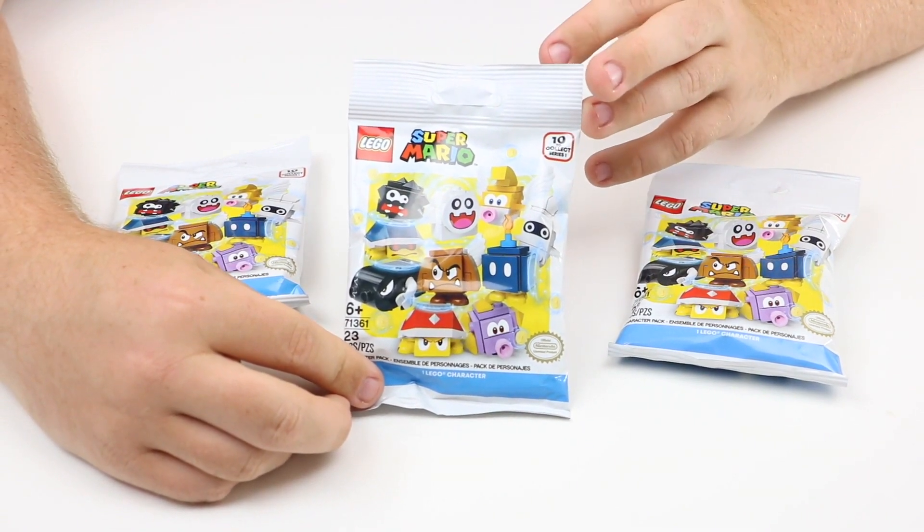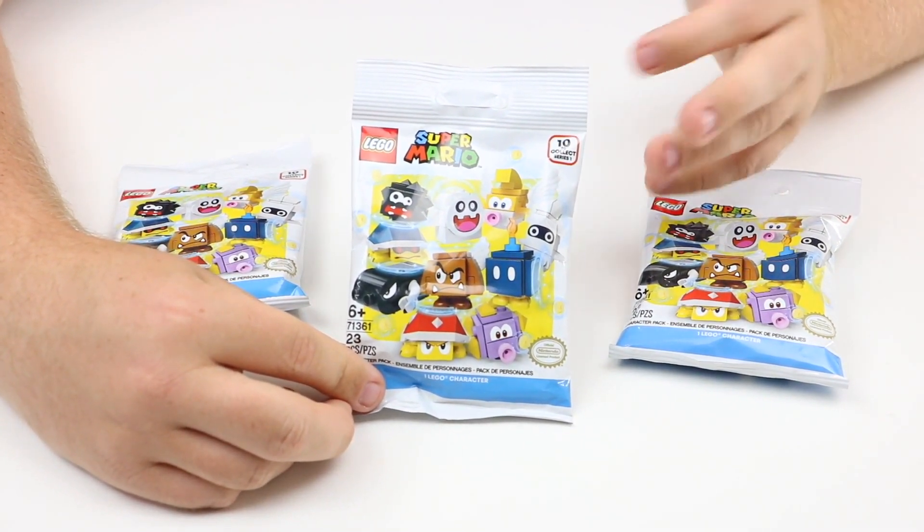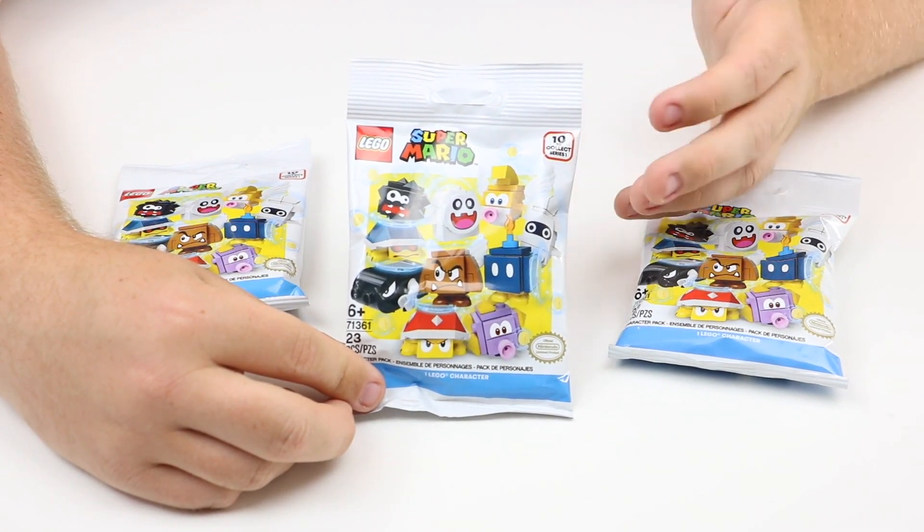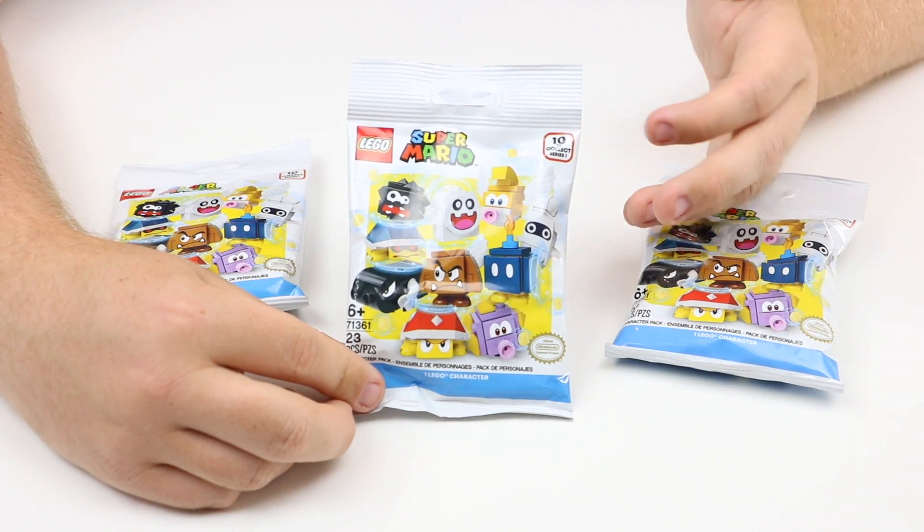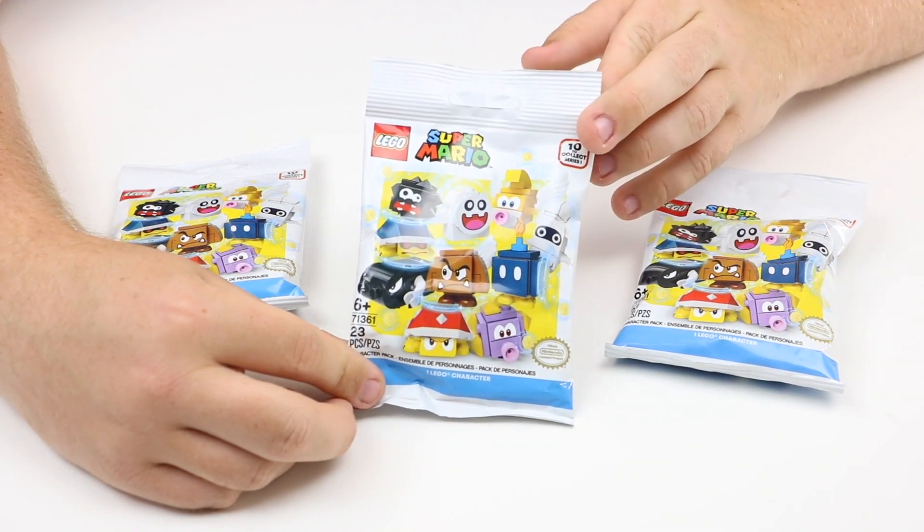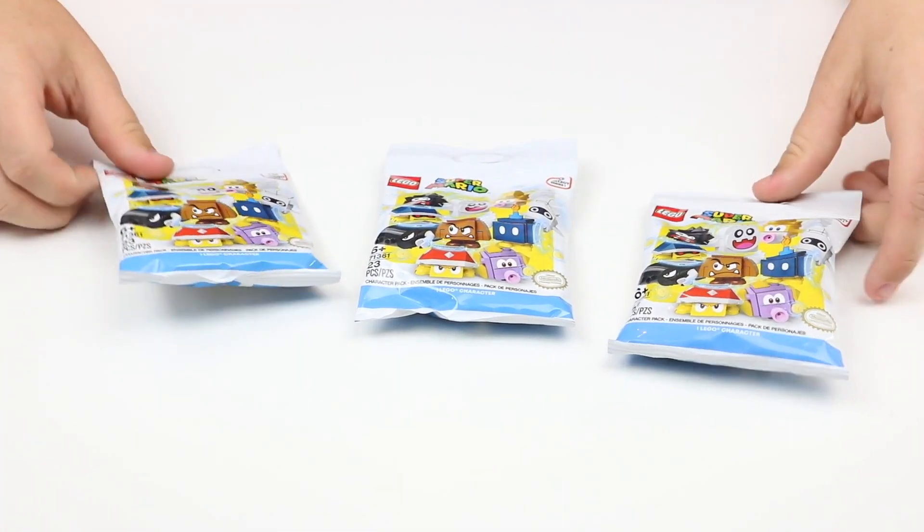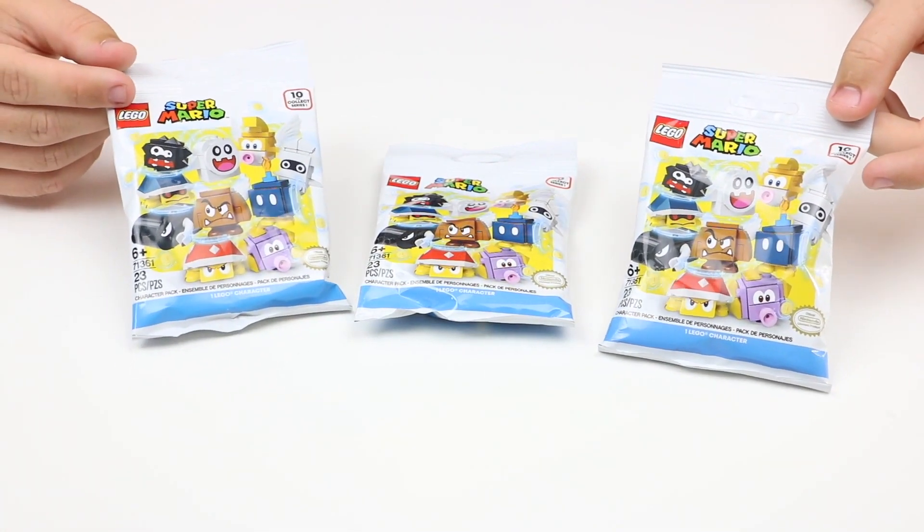Unlike collectible minifigures, these ones are impossible to feel. They're more like the Unikitty style in the sense that you have no idea which figure you're going to get, because there are 23 LEGO pieces inside and feeling them would make it incredibly difficult. As I mentioned in my recent haul video, I did pick up three of them because that is the limit you can get on LEGO Shop at Home.